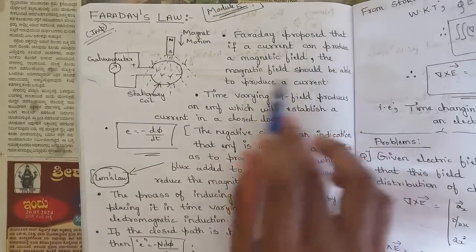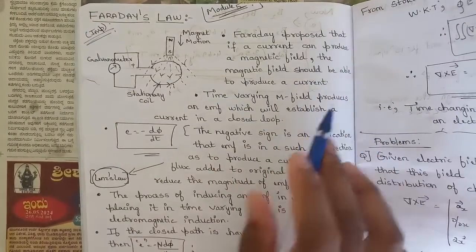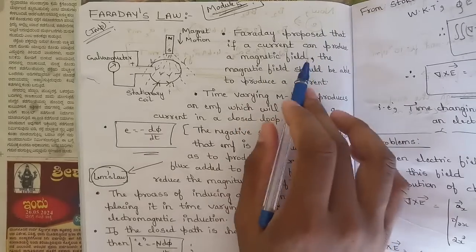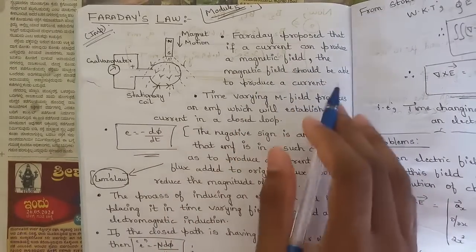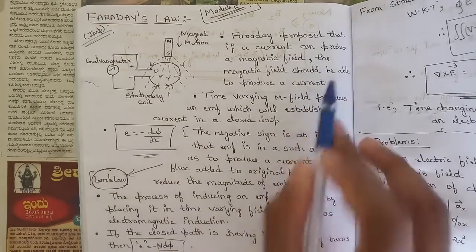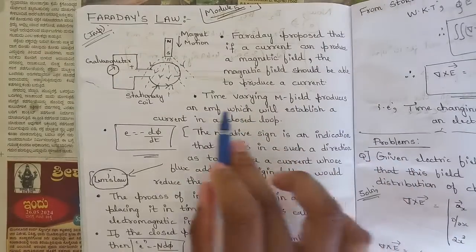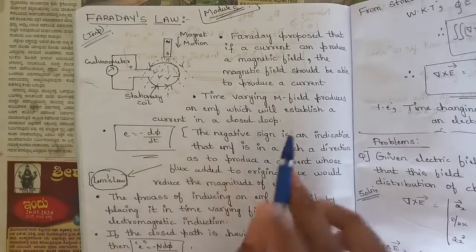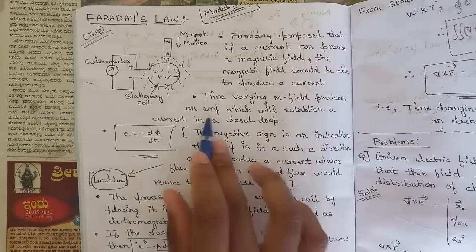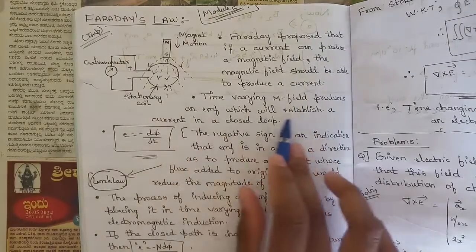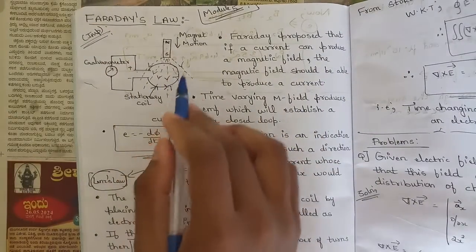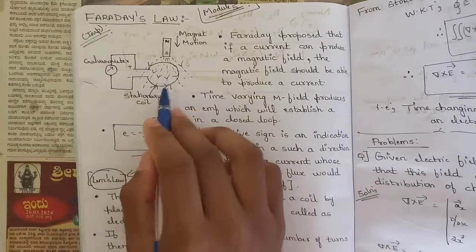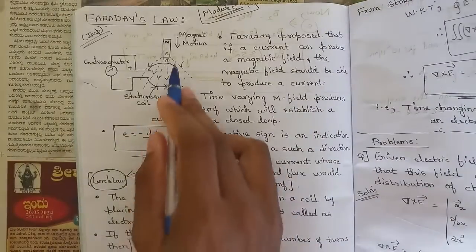Faraday proposed that if a current can produce a magnetic field, the magnetic field should also be able to produce a current. He proposed that vice versa — a time-varying magnetic field produces an EMF or electromotive force which will establish a current in a closed loop. When the production of EMF is happening, current flows through the coil in this closed loop.